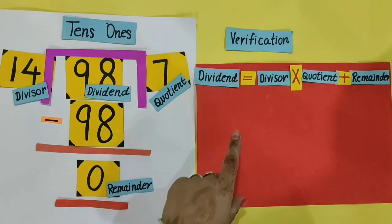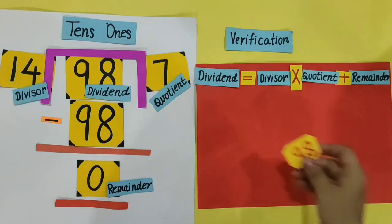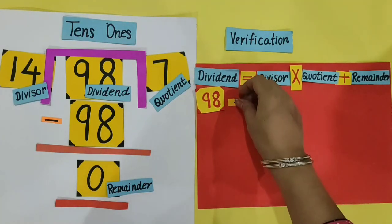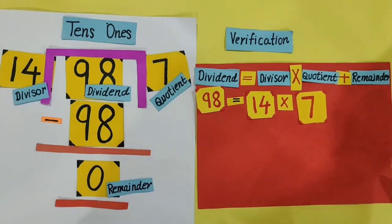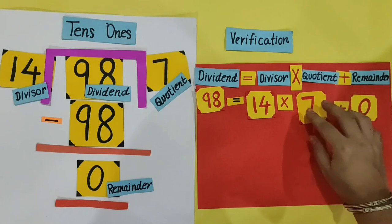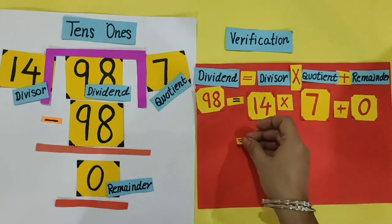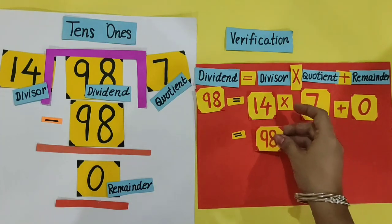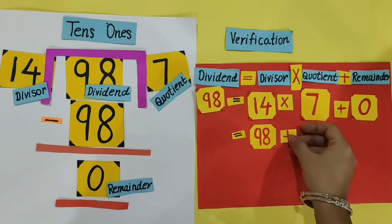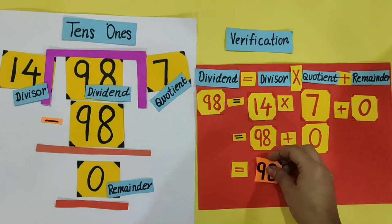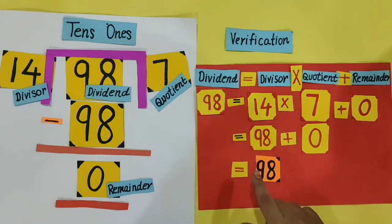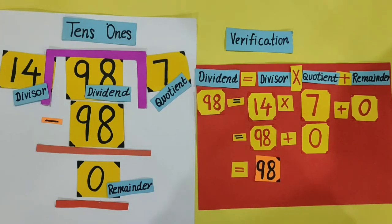Now we do verification. Dividend 98 equals divisor 14 multiplied by quotient 7 plus remainder 0. We multiply the divisor and quotient: 14 multiplied by 7 is equal to 98, plus 0. 98 plus 0 is equal to 98. This equals the dividend. 98 is equal to 98, and we have verified our answer.